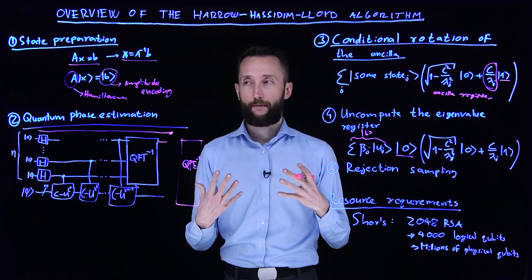Once we do this, we can confidently do a rejection sampling, which means that we measure the ancilla. If we get zero, we discard everything and we restart the calculation. If we get one, that means that now whatever output you get is in probability proportional to the inverse of lambda. That's what we are going to use to estimate observables or some measurable thing where we need the solution of the linear system of equations.